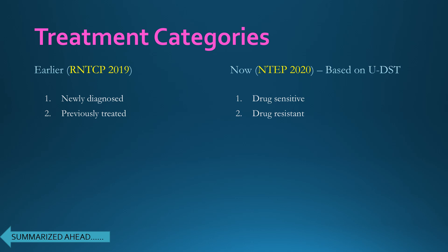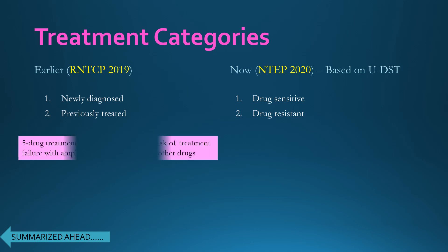The five-drug treatment regimen used in previously treated patients of RNTCP 2019 — which was 2HRZDS + 1HRZD + 5HRE — was found to be associated with increased risk of treatment failure and amplification of resistance to other drugs. Therefore, a unified treatment guideline has now been issued regardless of whether the patient is newly diagnosed or previously treated.